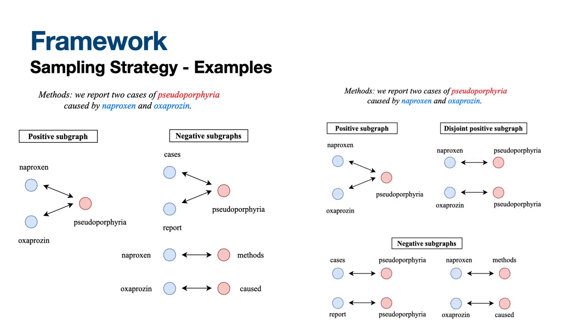For the CLDR model, we have an intermediate step where we create the disjoint positive subgraphs, and then we sample the negative subgraphs.